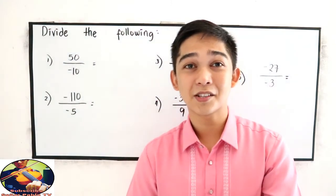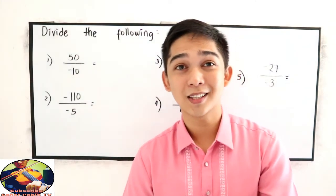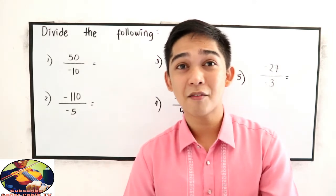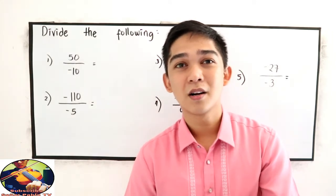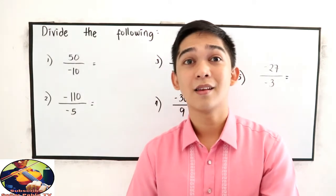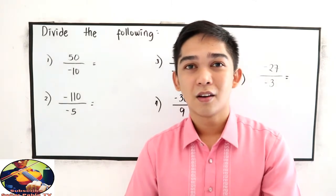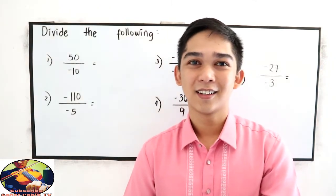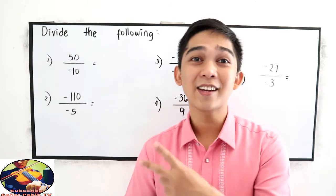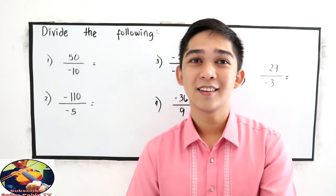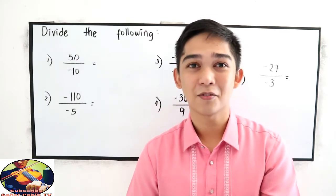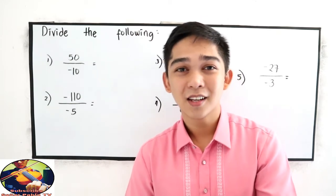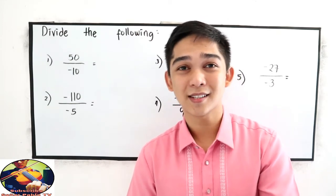This video will be the exercises for the division of integers. Now let's have a brief recall about our rules in division. If we divide like signs, the quotient is positive. If we divide unlike signs, the quotient is negative.